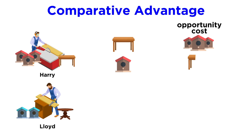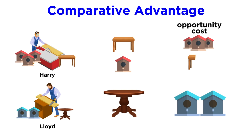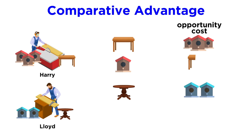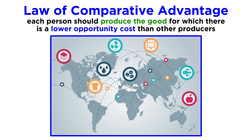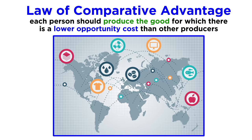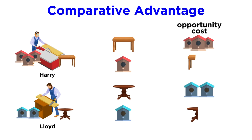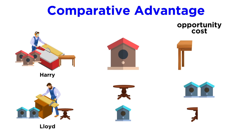Now let's look at Lloyd. The opportunity cost of Lloyd making one table is just two birdhouses, while the opportunity cost of Lloyd making one birdhouse is half of a table. According to the law of comparative advantage, each person should produce the good for which there is a lower opportunity cost than other producers. Harry's opportunity cost for making one birdhouse — one third of a table — is lower than Lloyd's opportunity cost for making one birdhouse — one half of a table.